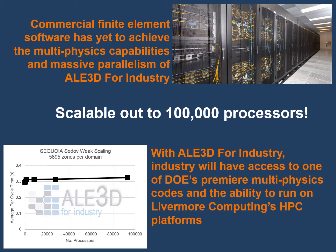So why AL3D for Industry? Commercial finite element software has yet to attain all of the multi-physics capabilities and massive parallelism of AL3D for Industry. AL3D is scalable out to 100,000 processors, and it is a requirement for AL3D to function on some of the biggest supercomputers in the world. This graph shows that we are attaining the same timing as we increase the size and processor count of the simulation. As an example, I am working on a simulation that has 760 million zones and runs on 9,200 processors, and due to the long time scale and physics of this problem, I was able to run the calculation for 32 days. With AL3D for Industry, industry will have access to not only one of DOE's premier physics codes, but also the ability to run on Livermore Computing's high performance computing platforms, allowing industry and academics to use a physics code tuned to run on thousands of processors.